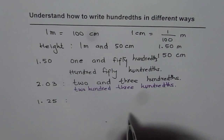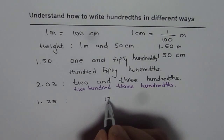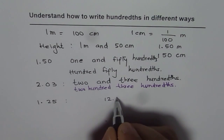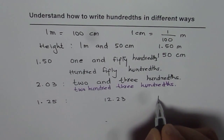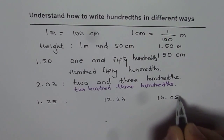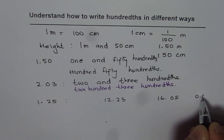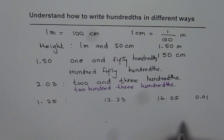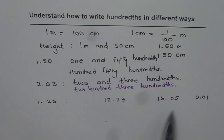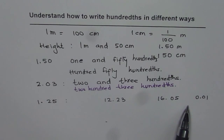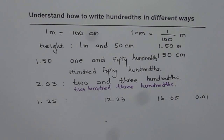Try writing the following numbers: twelve point two three, sixteen point zero five, and zero point zero one in words. Write each of these numbers in two different ways — that would be a good exercise for you. Thank you and all the best.